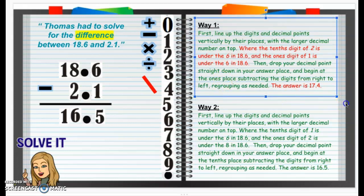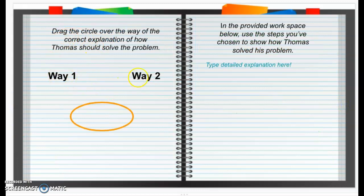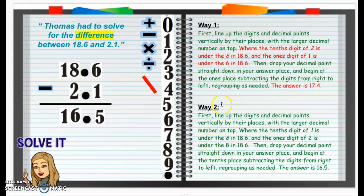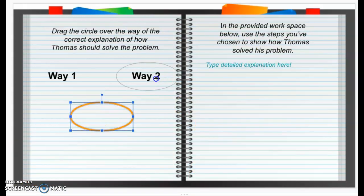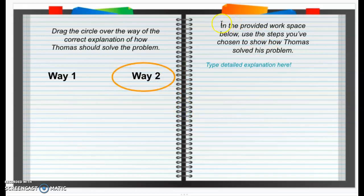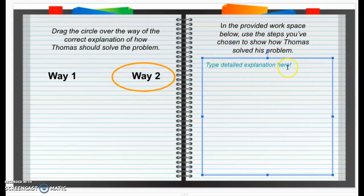So when we go now to the next slide, we're going to drag this circle over the way of the correct explanation of how Thomas should solve his problem. He should solve the problem exactly how Way 2 is describing, so we're going to put this circle over Way 2. Now on the right side, in the provided workspace below, use the steps that we've chosen to show how Thomas solved his problem. You are going to type a detailed explanation of the steps that we've chosen — how did you subtract? What did you have to do first? What did you do next? Put those details in that text box.